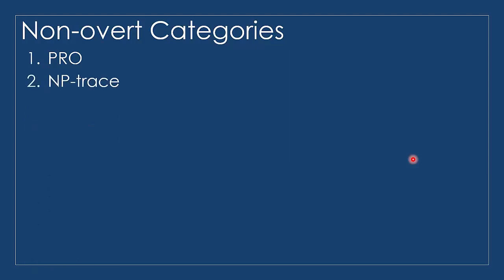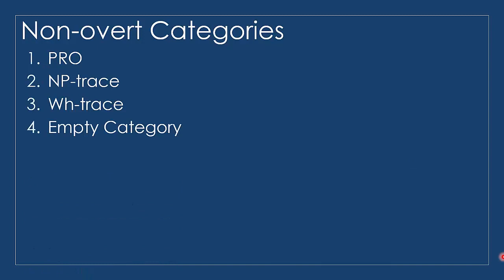Next we have NP trace — when an NP moves, it leaves a trace. Then we have WH trace. And then we have empty category. We will talk about these four kinds of non-overt categories one by one.